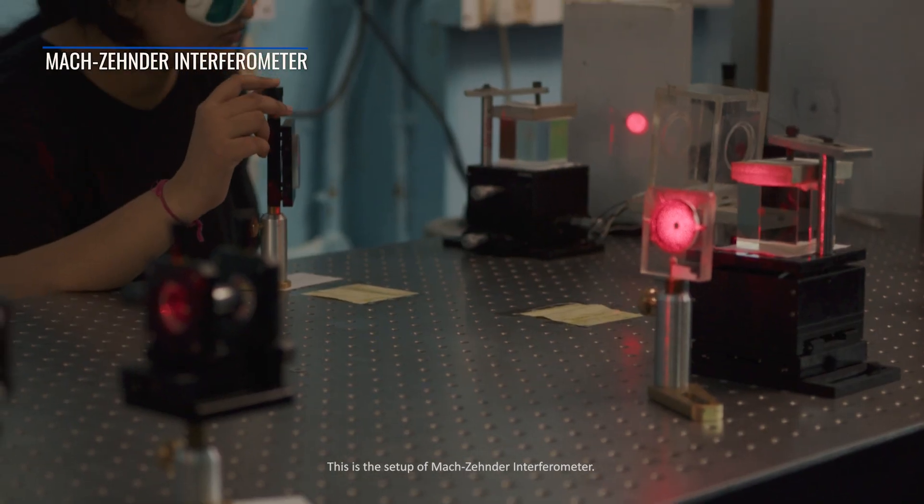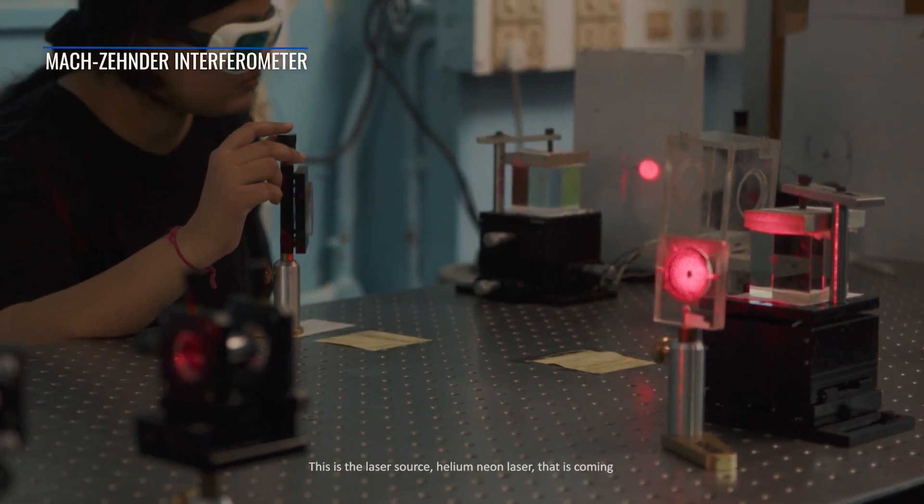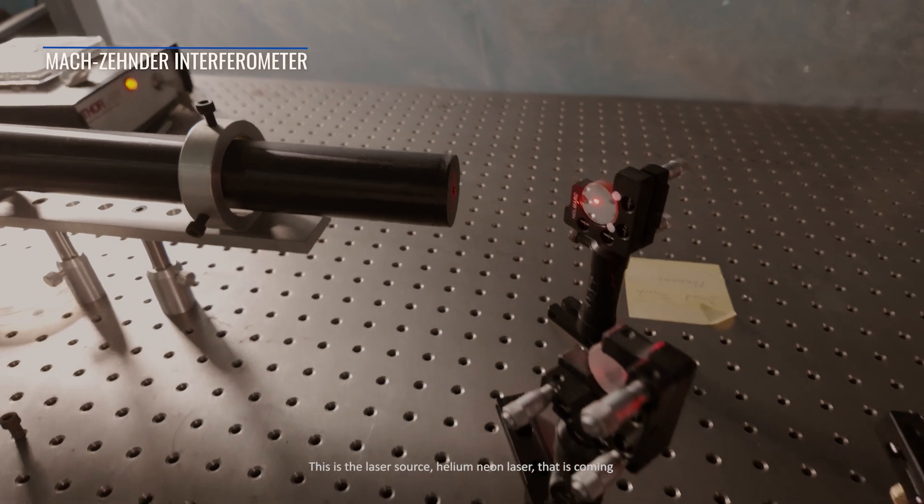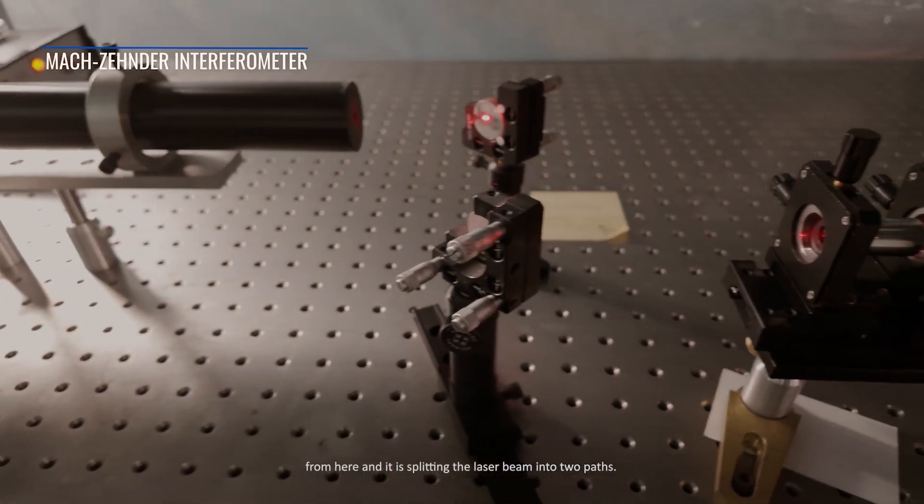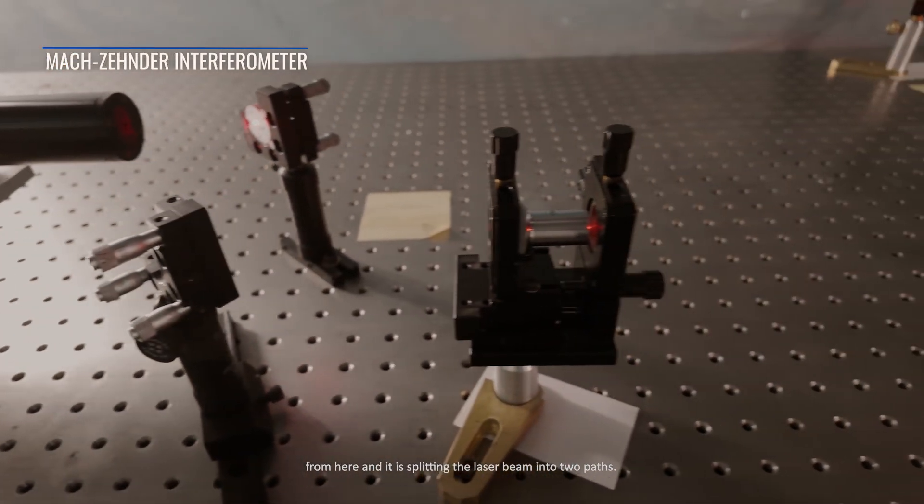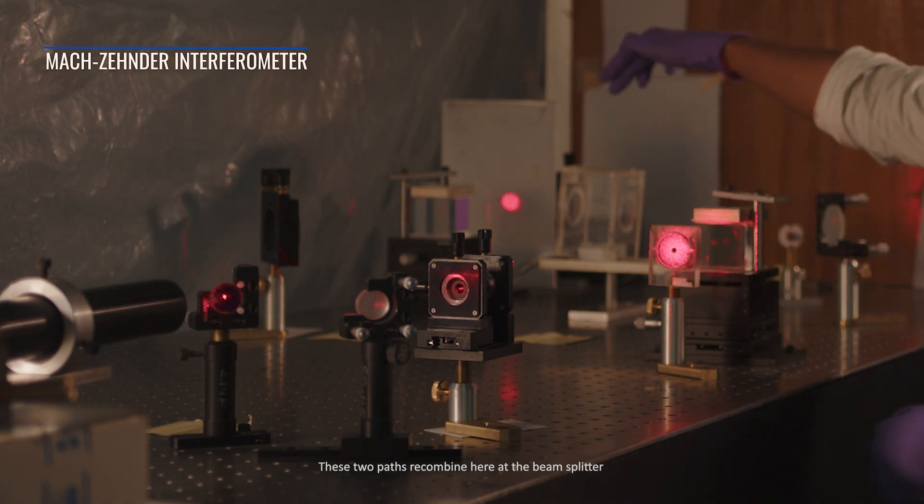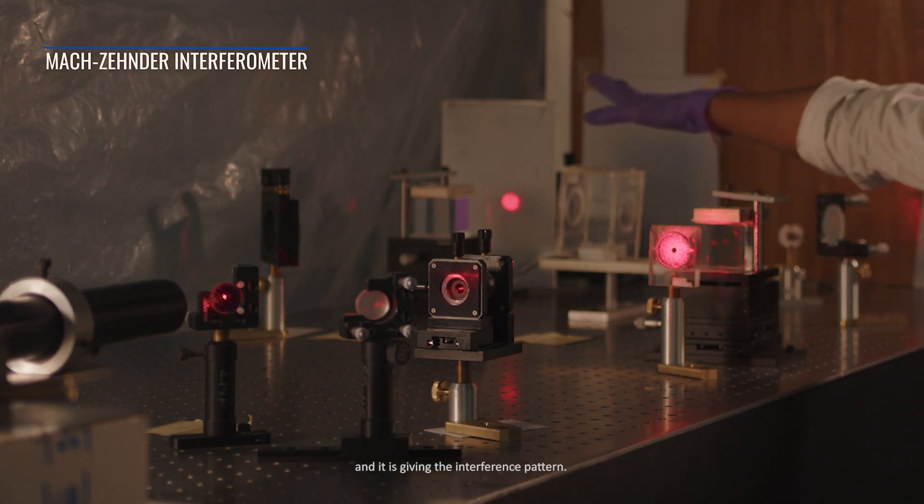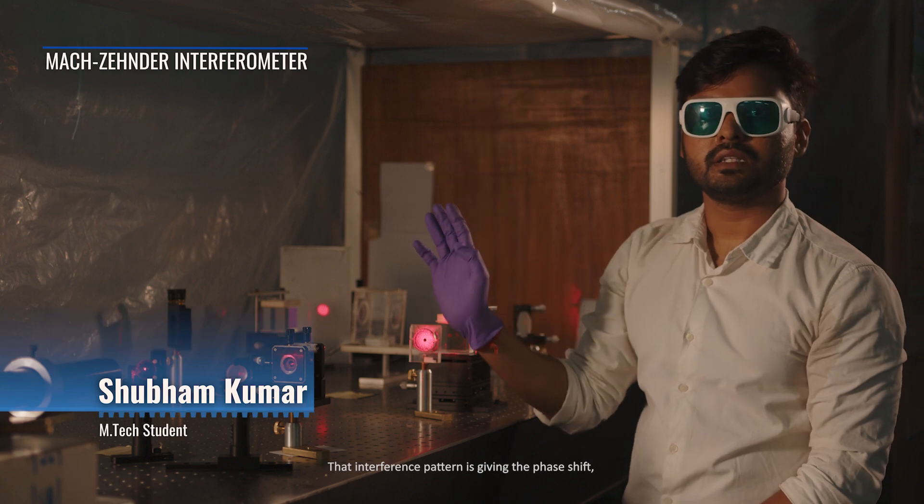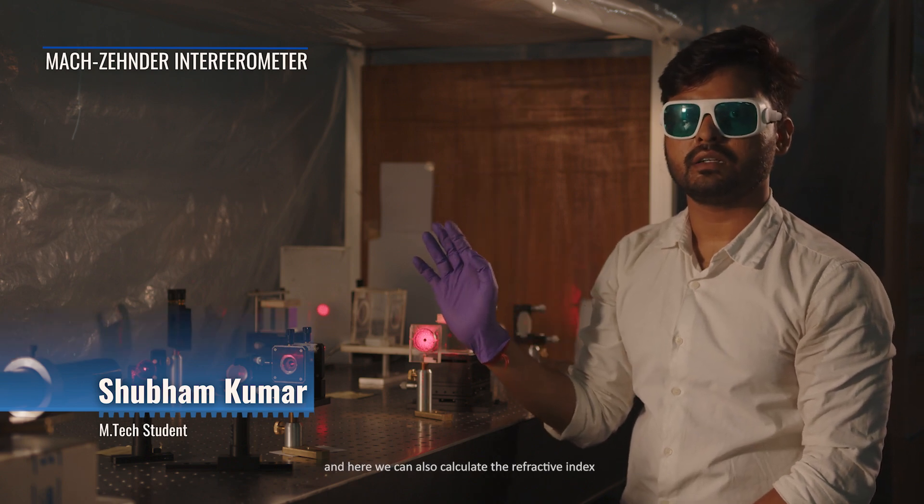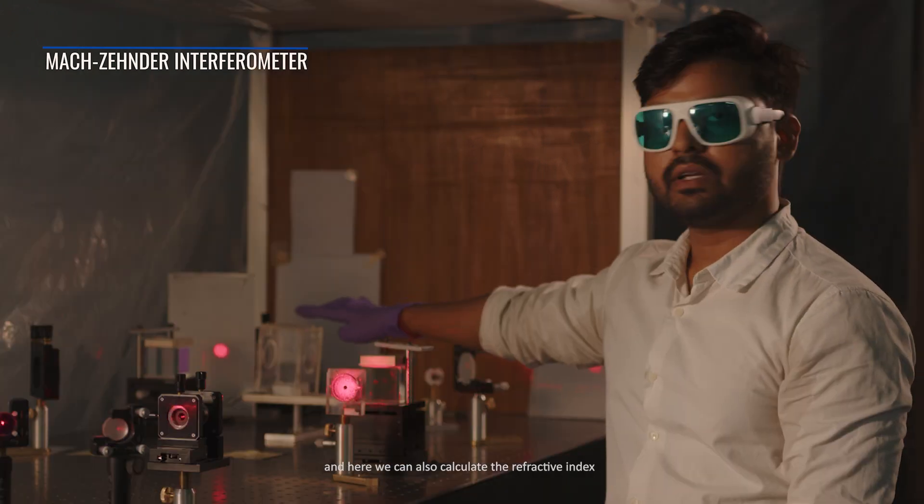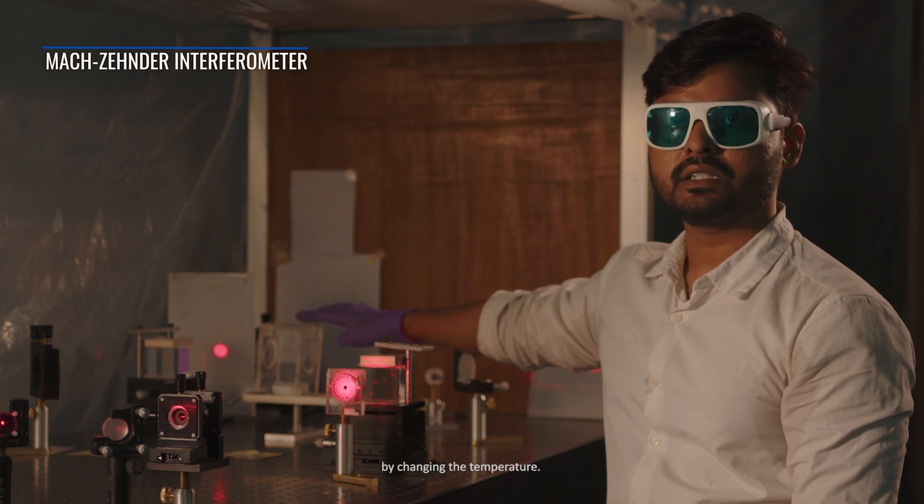This is the setup of Mach-Zehnder interferometer. This is the laser source, a helium-neon laser that is coming from here, and it is splitting the laser beam into two paths. These two paths recombine here at the beam splitter and it is giving the interference pattern. That interference pattern is giving the phase shift, and here we can also calculate the refractive index by changing the temperature.